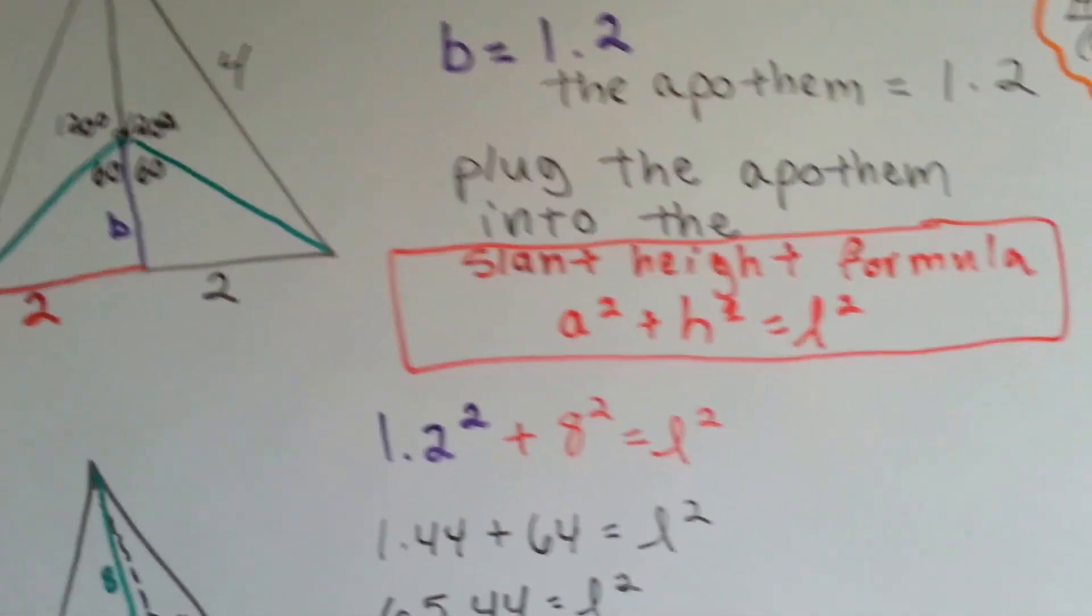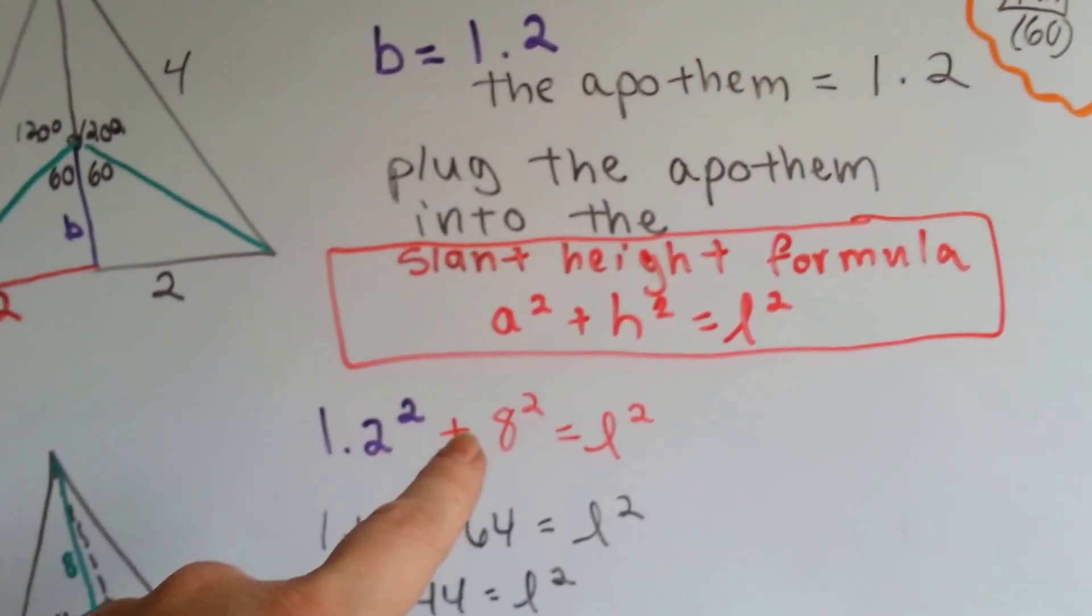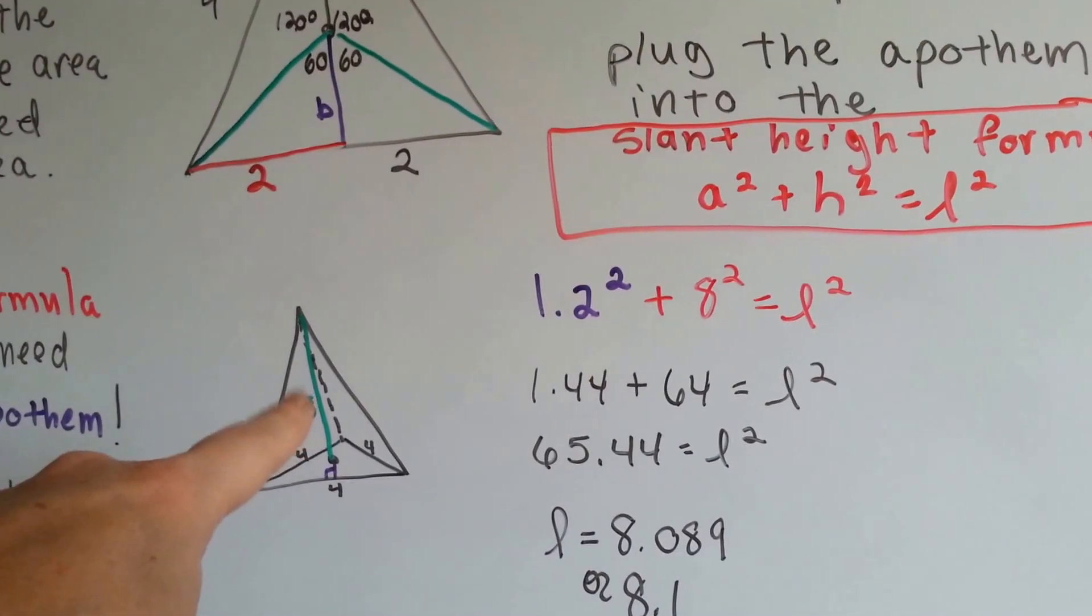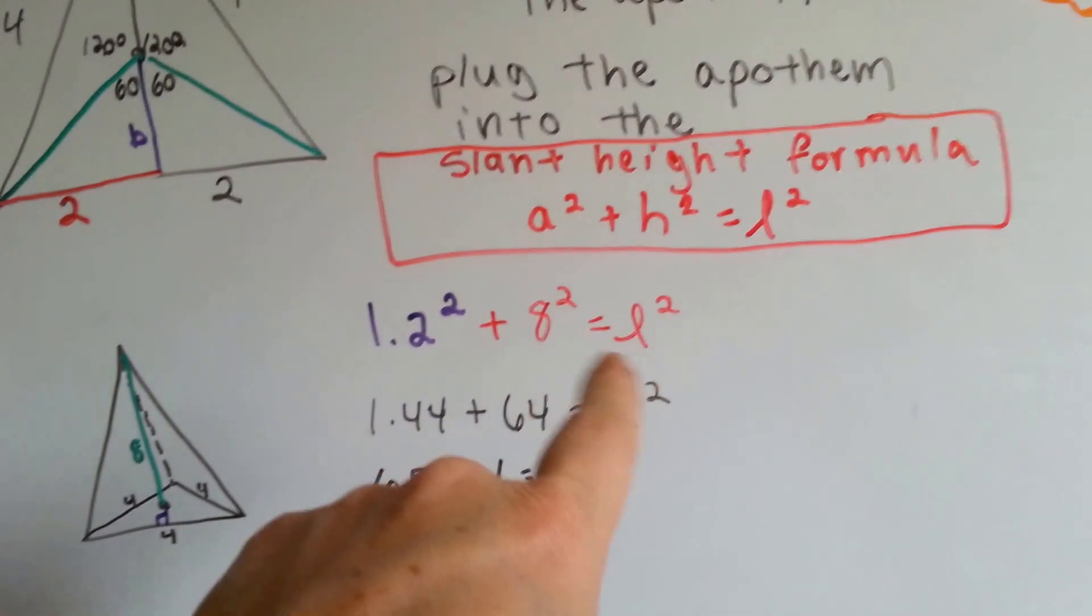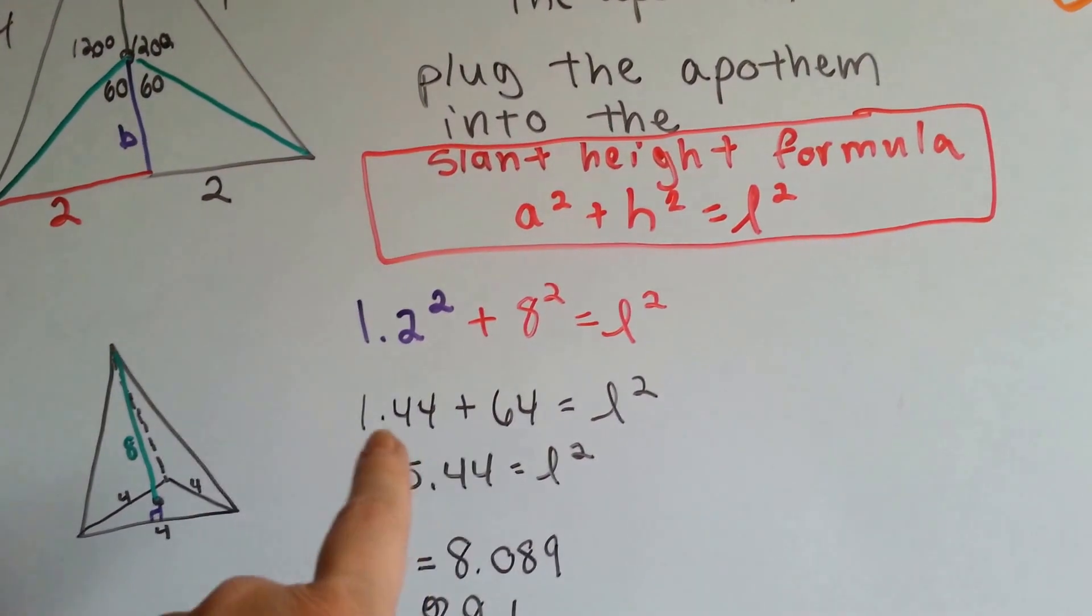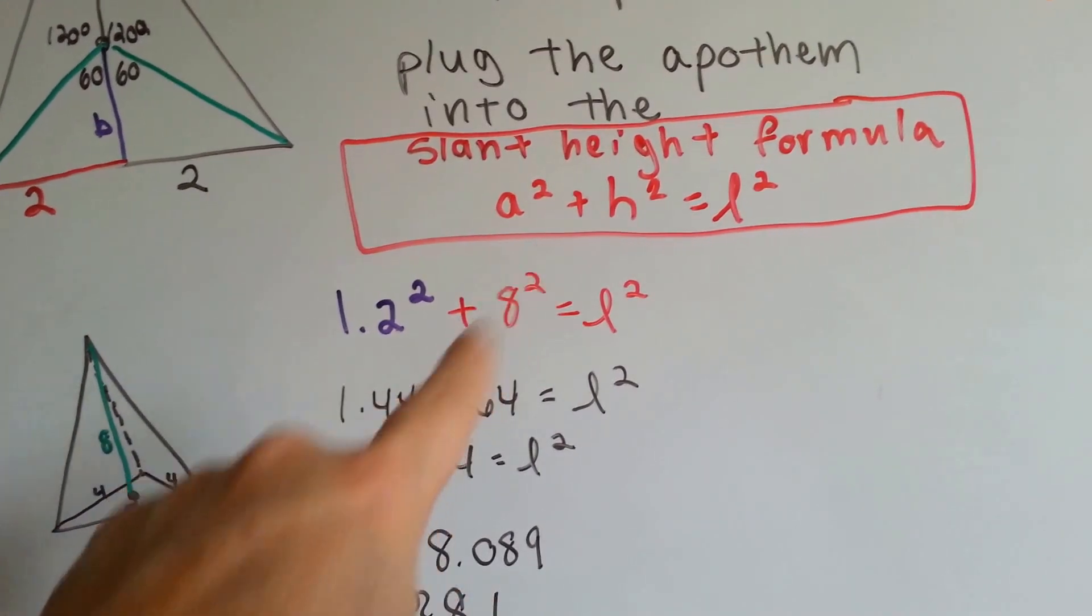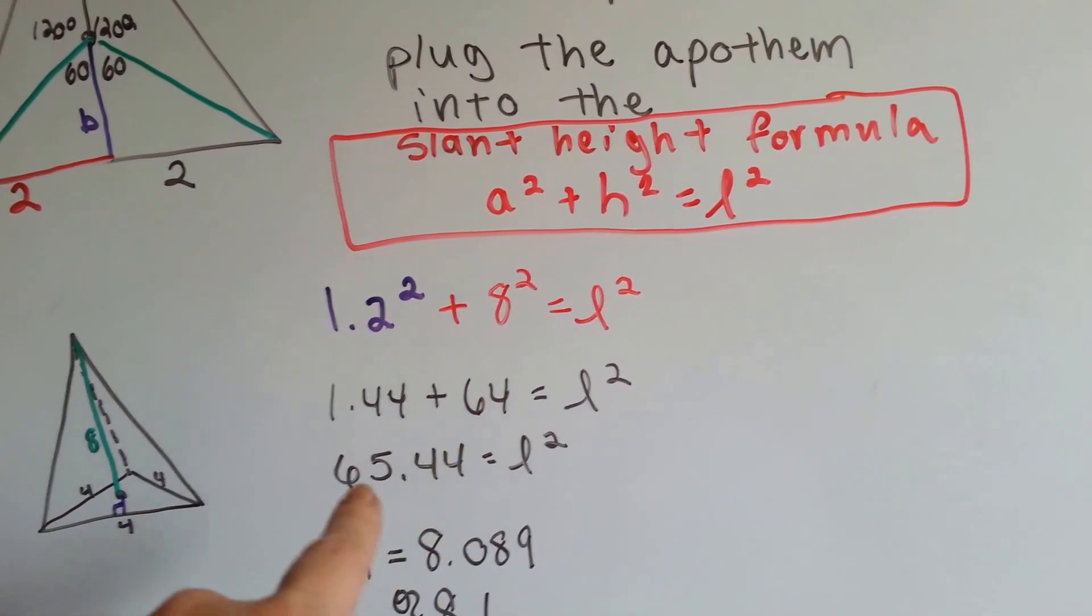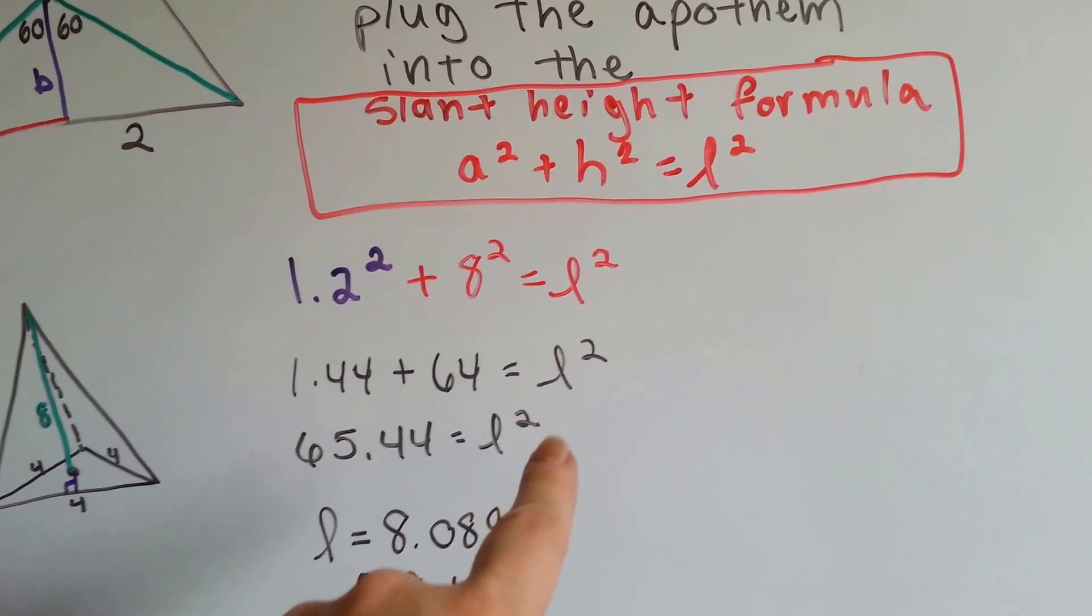Now we can plug that into the slant height formula. So we've got 1.2 squared plus the height, which is 8. The height is 8, that's from the center up to the vertex. Squared is going to equal L squared. So 1.2 squared is 1.44. 8 squared is 64. So 1.44 plus 64 is 65.44 equals the L squared.